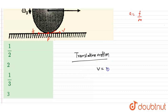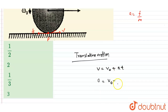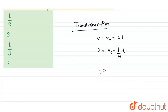For translational motion, using v = u + at: initial velocity u = v₀, final velocity v = 0 (comes to rest), and acceleration is negative (friction opposes motion), so 0 = v₀ − (f/m)·t. From this, the time t = mv₀/f. This is equation number one.